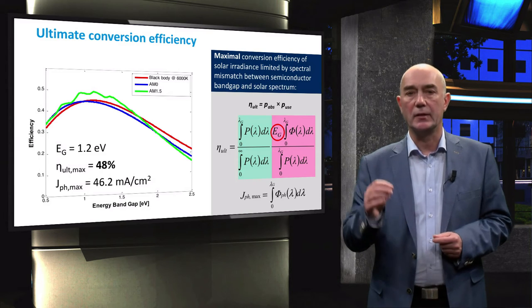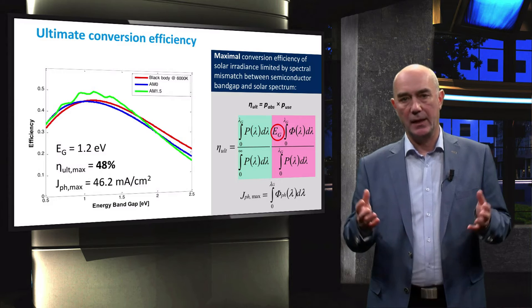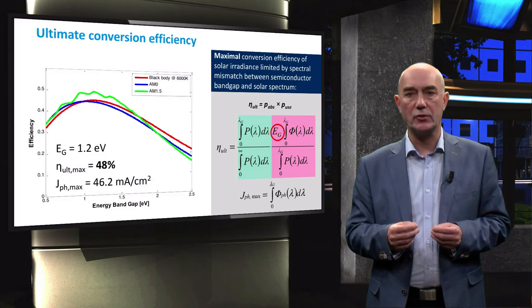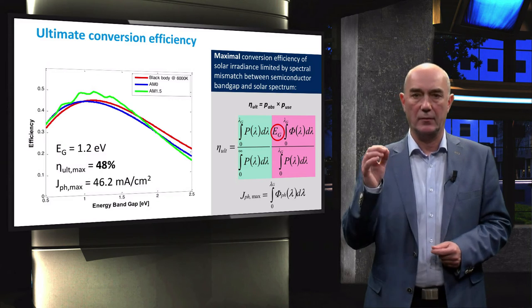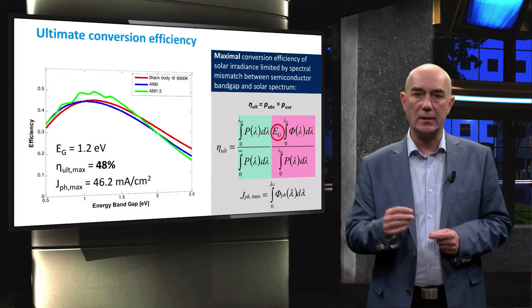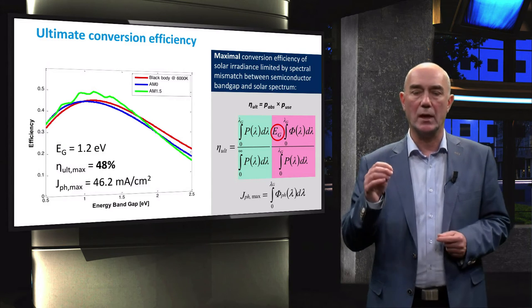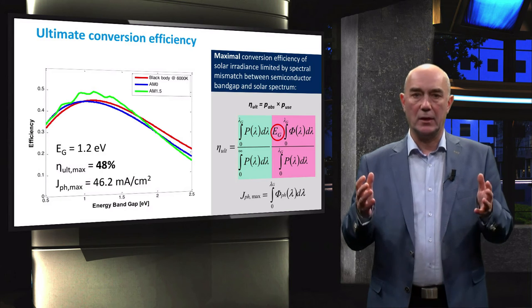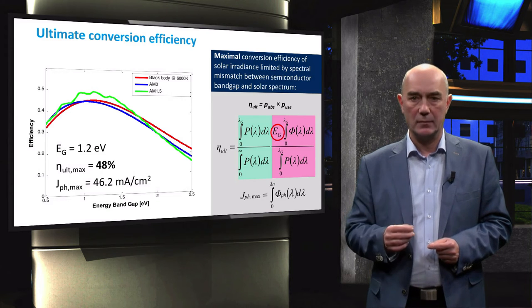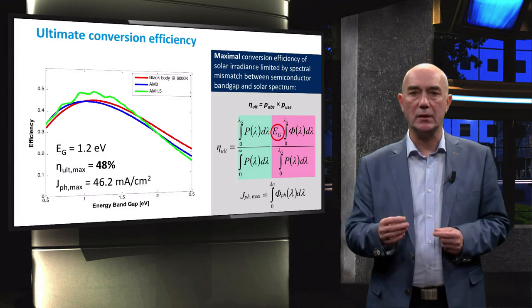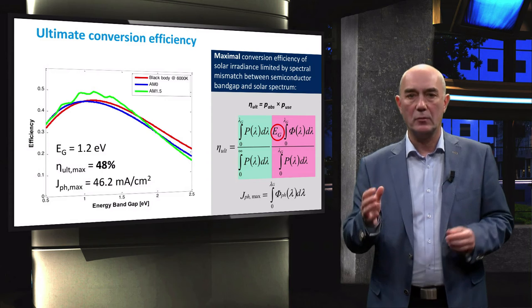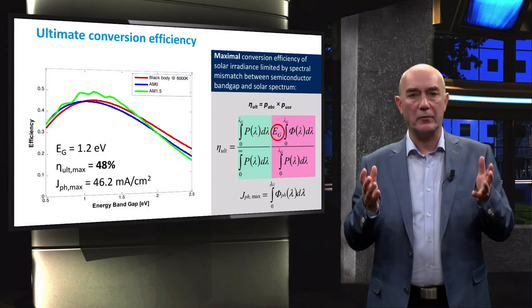However, this ultimate efficiency of 48% assumes that the bandgap energy corresponds to an electrochemical potential equal to the open circuit voltage. When the bandgap is 1.2 eV, this means that the open circuit voltage is equal to 1.2 volts. We call the electrochemical potential related to the bandgap of the absorber Vg. However, the open circuit voltage in real solar cells is not equal to Vg. Let's look what the open circuit voltage limit of a real solar cell is.